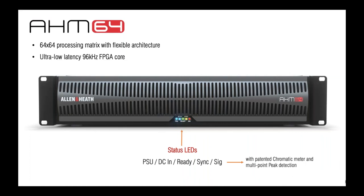First off, the AHM64 has a 64x64 processing matrix inside with flexible architecture — more on this very soon. It uses ultra-low-latency 96 kHz FPGA technology from Allen & Heath. On the front panel there are no controls, only status LEDs including power supply status for both mains voltage and DC 12V, a radio LED meaning the unit is ready to pass audio, a sync LED for clock settings, and our patented chromatic signal meter with multi-point peak detection.